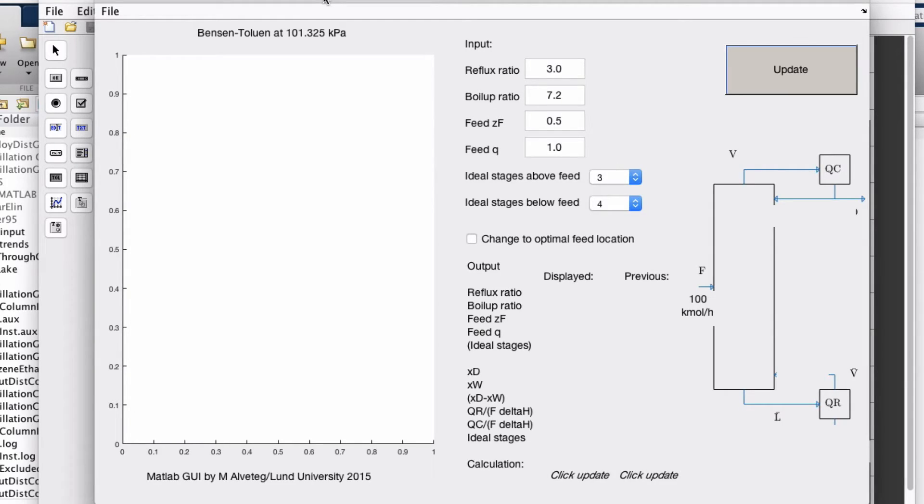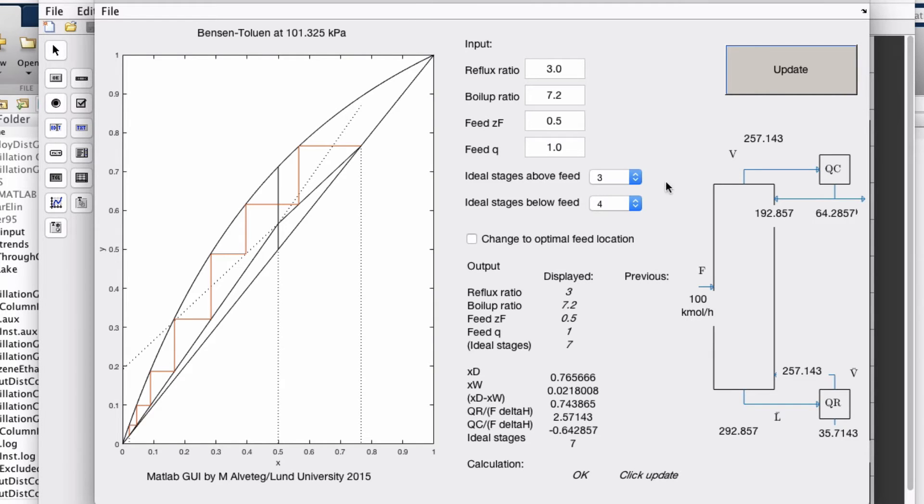In this demo, I'm using a program where you, instead of setting xd and xw, you set the operating conditions. So we have how many ideal stages we have above the feed and below the feed, and then it calculates xd and xw for us. So this is simulating a real column, or using the same kind of simplifications we've done before.